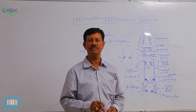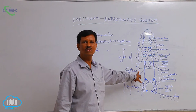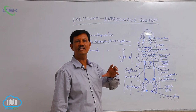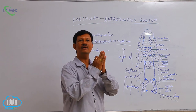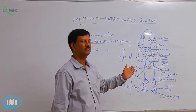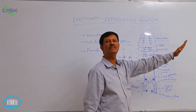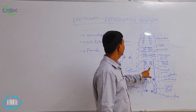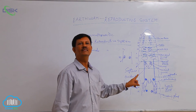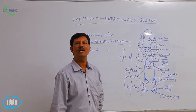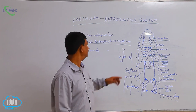Fertilization takes place in the clitellum, present in the 14th, 15th, and 16th segments. In the clitellum region, special cells secrete a cocoon. During breeding season, two earthworms come close together on the ventral side and with the help of genital papillae are tightly attached. They exchange male gametes with each other. After exchange of male gametes they separate, and female gametes are also liberated into the cocoon. Both male and female gametes are present in the cocoon, which is released into moist soil. Development takes place in the moist soil and young earthworms emerge from the cocoon. Development is direct with no larval form.